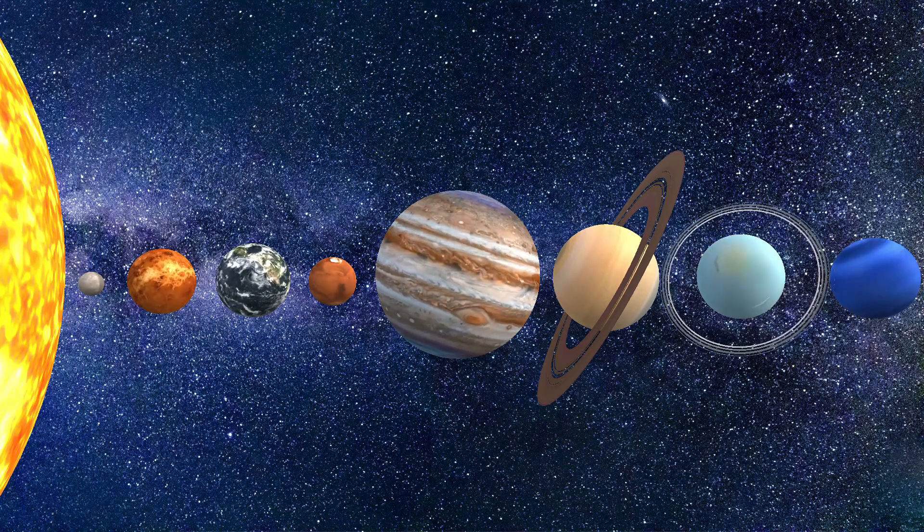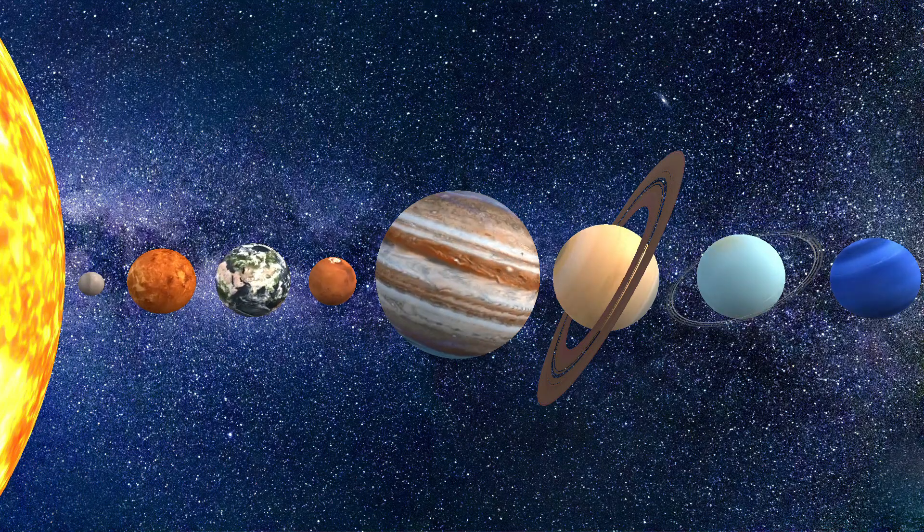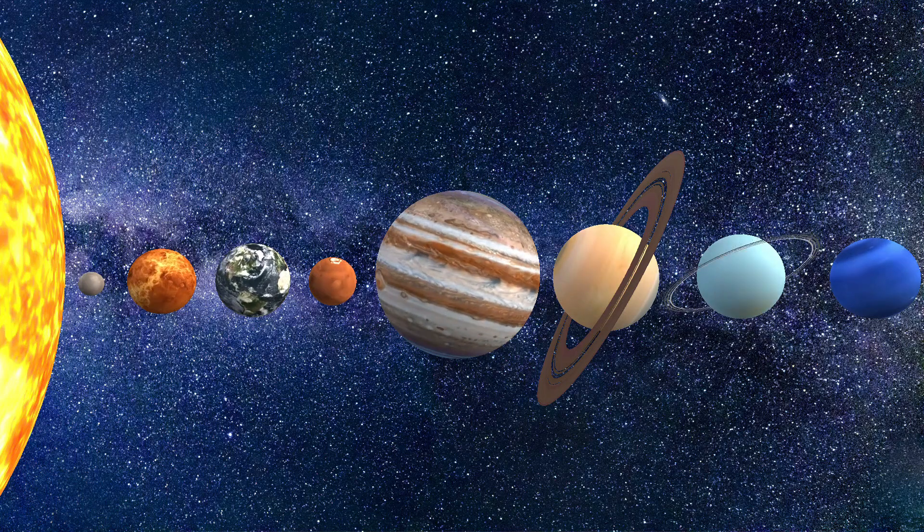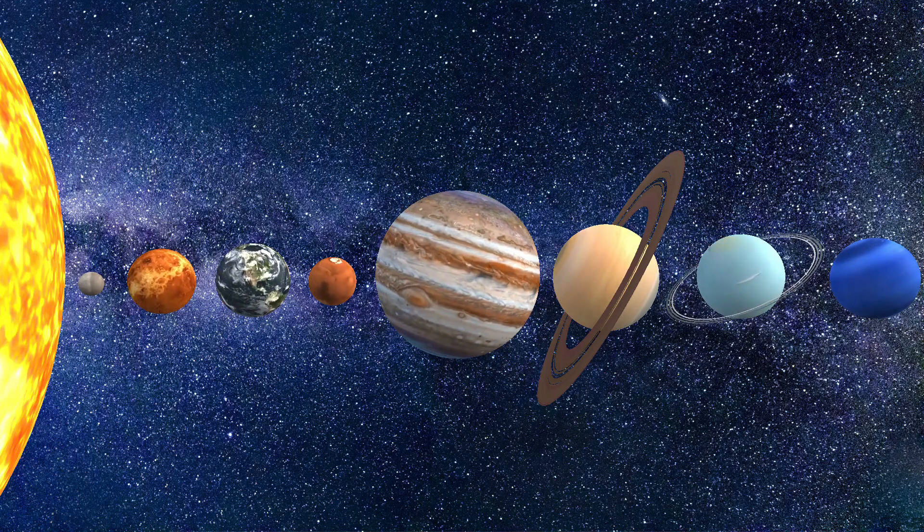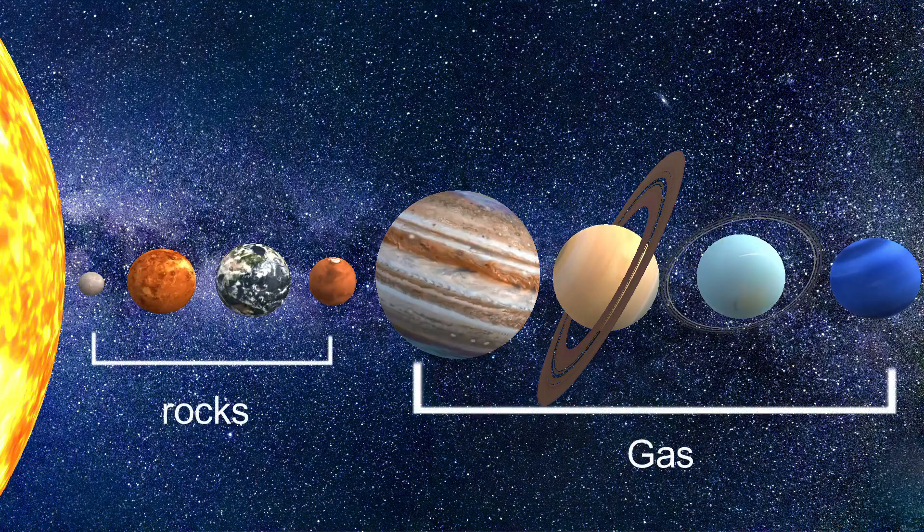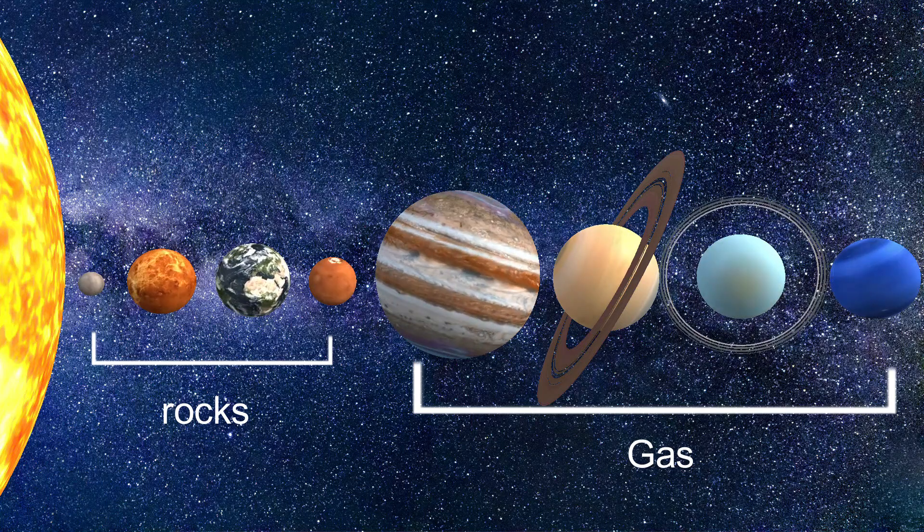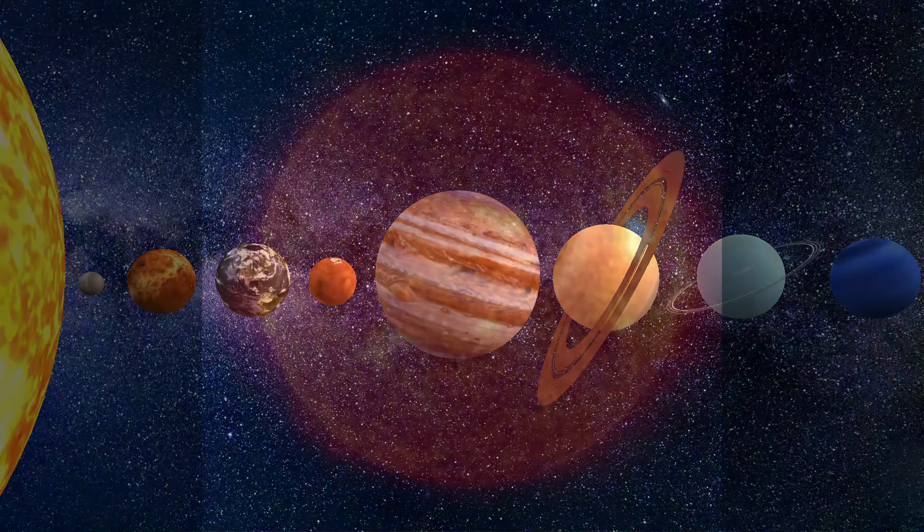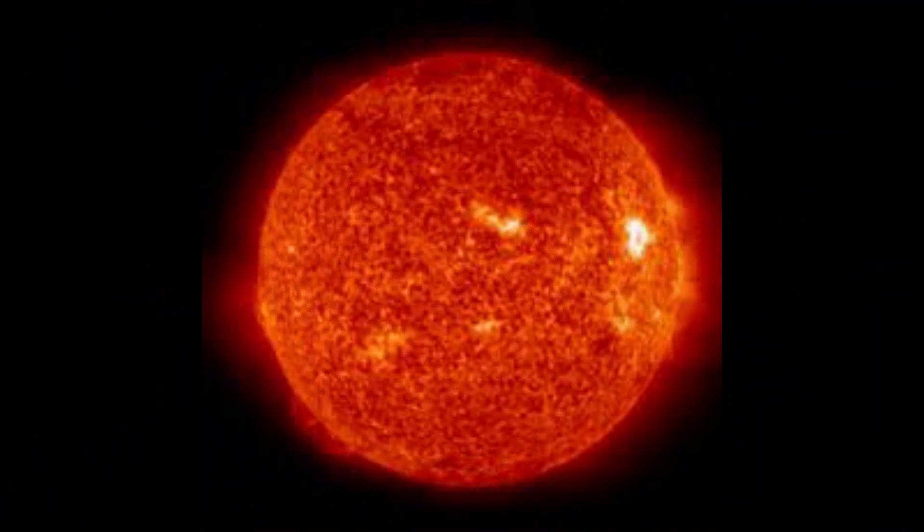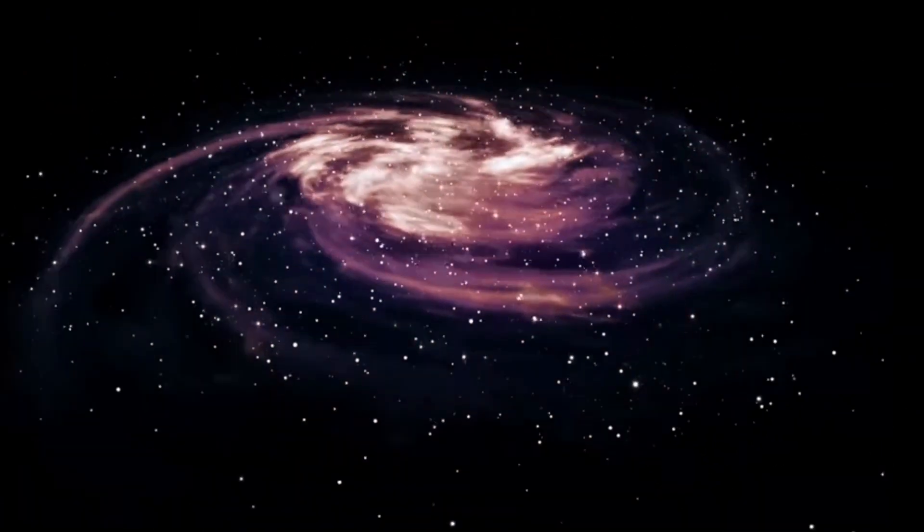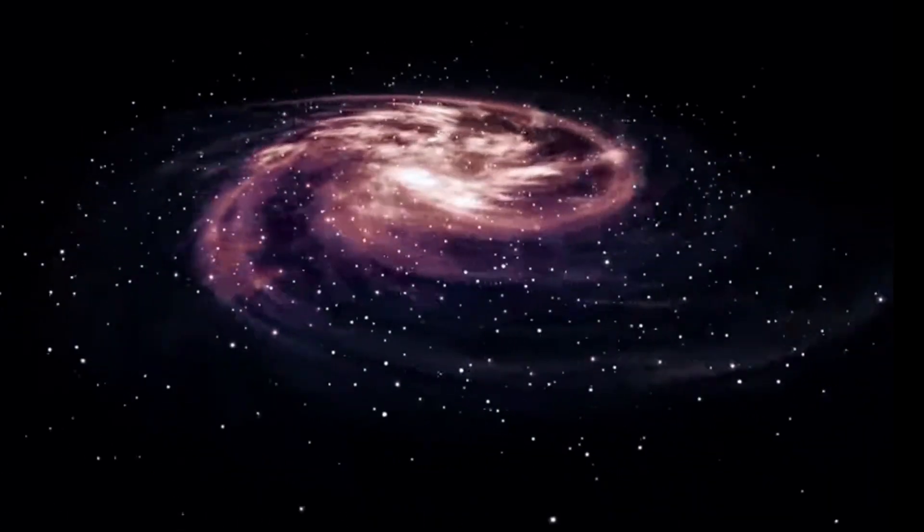Have you ever noticed that planets are sphere in shape? No matter whether they are big or small, their composition is made up of gas or rock, their shape is still sphere. Wait, not only planets, but suns, moons and almost everything in space is sphere. But why?